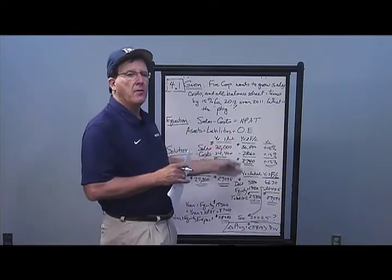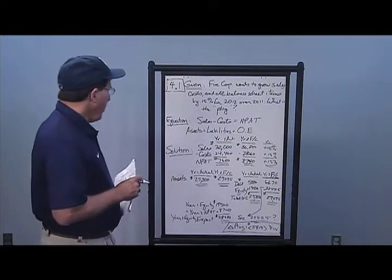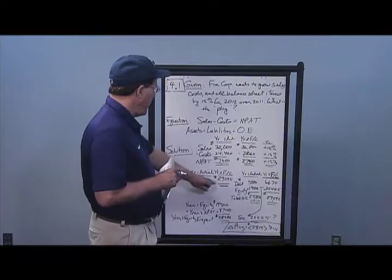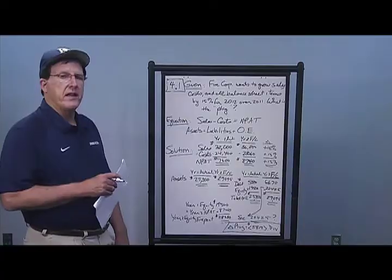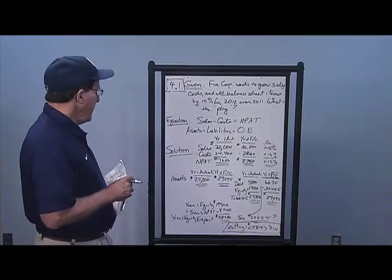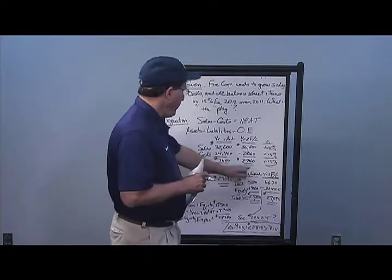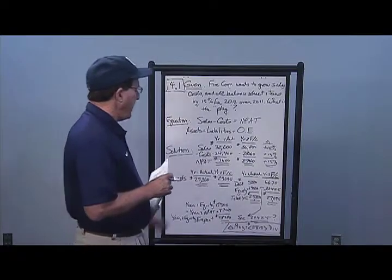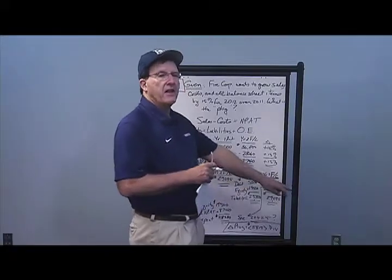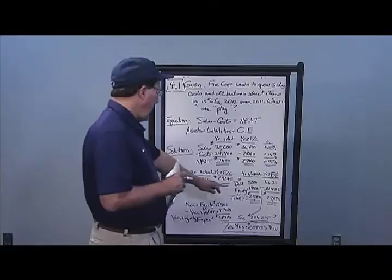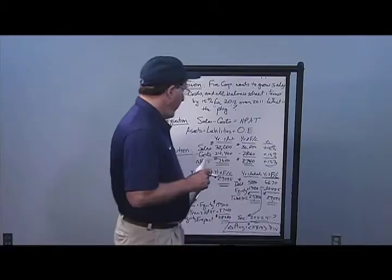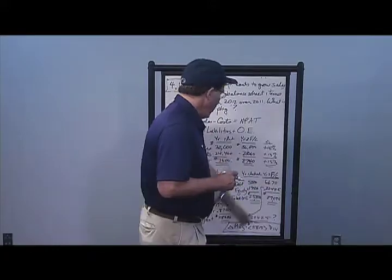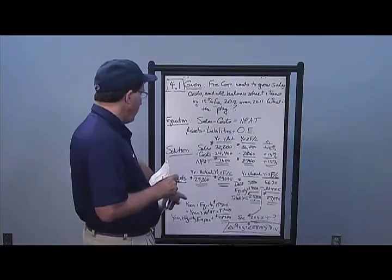Same thing on the balance sheet: I take my assets of 25,300 given, multiply by 1.15, and get 29,095 for my year two assets. On the right side, I take my debt of 5,800 times 1.15 and get 6,670. I take my equity of 19,500 and multiply by 1.15 and get 22,425.